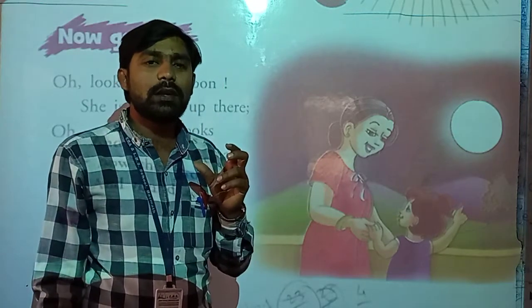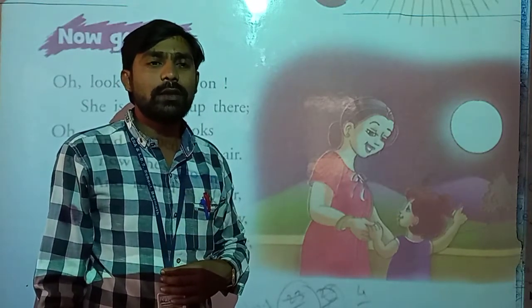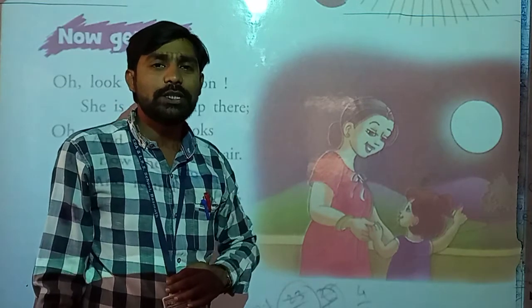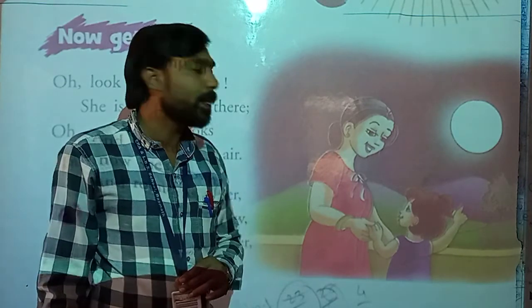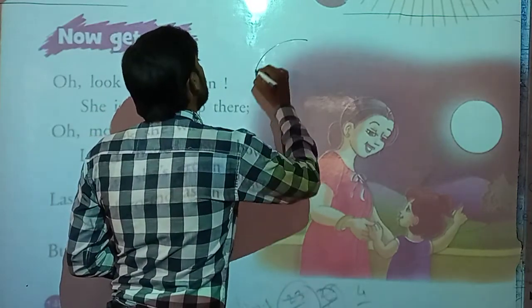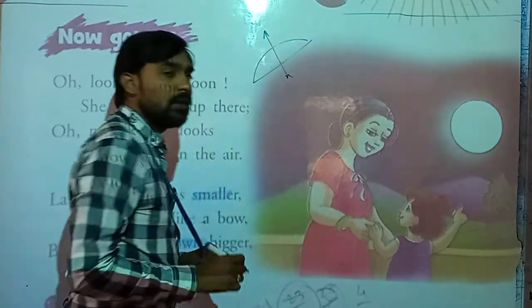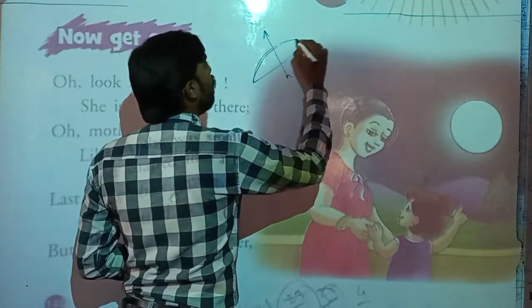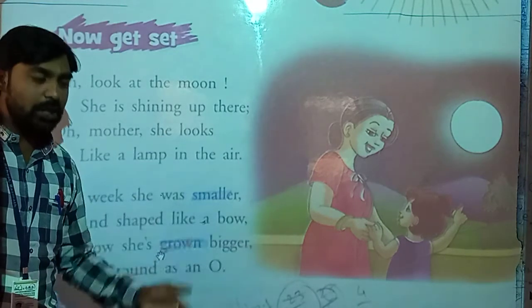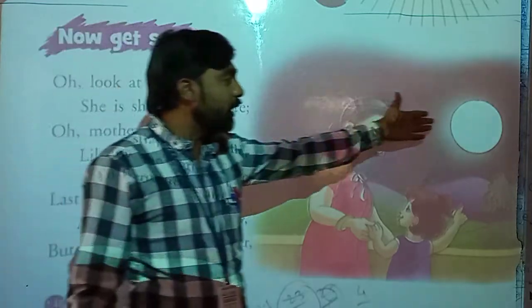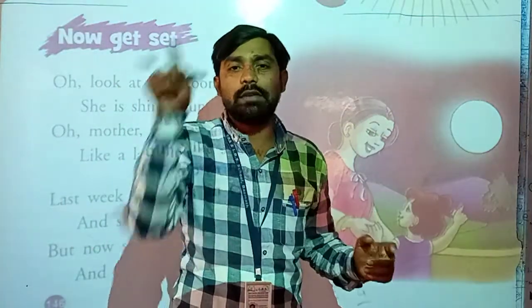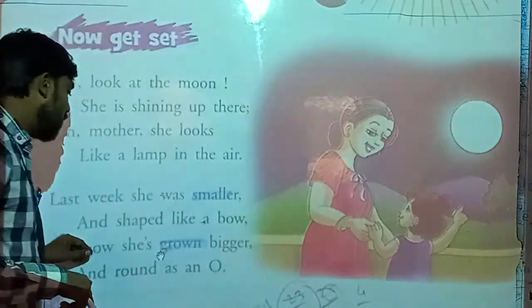Do you know what a boat is? This is a boat — we will use that boat shape as a comparison. Last week the moon was looking like a boat. But now she is grown bigger and it is looking like an O — our letter O. So it is looking like a full round O shape.